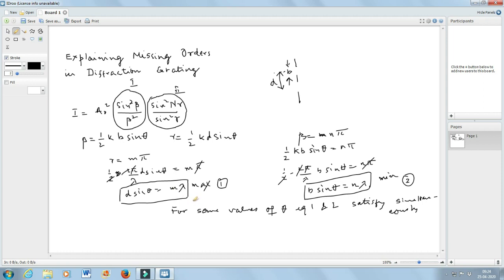So how can I get this condition? If you divide 1 by 2, then d by b is equal to m by n is equal to an integer. Whenever this happens, there would be a minima instead of a maxima.